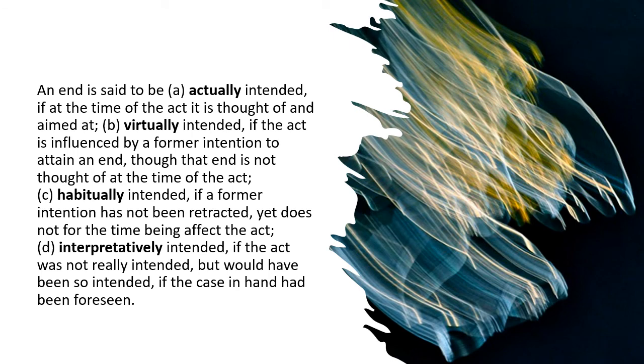An end is also said to be actually intended if, at the time of the act, it is thought of and aimed at. It is virtually intended if the act is influenced by a former intention to attain an end, though that end is not thought of at the time of the act. It is habitually intended if a former intention has not been retracted, yet does not, for the time being, affect the act. Interpretatively intended if the act was not really intended, but would have been so intended, if the case in hand had been foreseen.